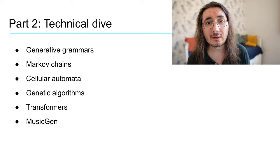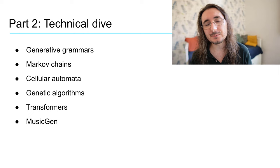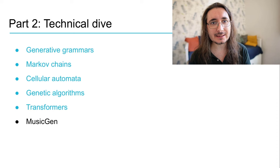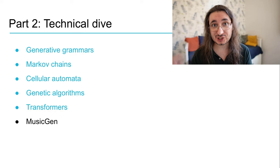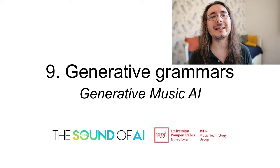Here is the menu of all the different generative techniques that we are going to be covering during Part 2. These are generative grammars, Markov chains, cellular automata, genetic algorithms, transformers and MusicGen — a system that leverages a transformer architecture, which is quite impressive and was published by Meta. For all the techniques highlighted in blue we're going to be looking both at the theory and the implementation. For MusicGen we're only going to be looking at the theory — we're not going to be implementing MusicGen from scratch.